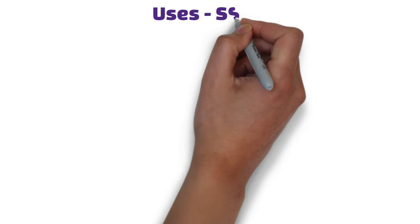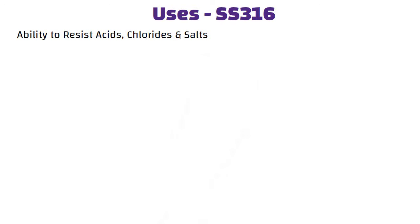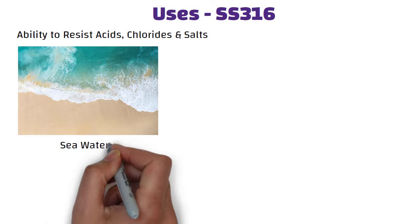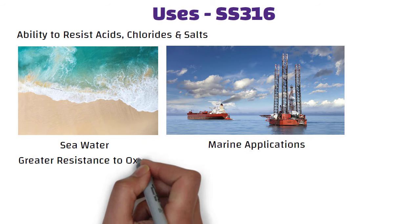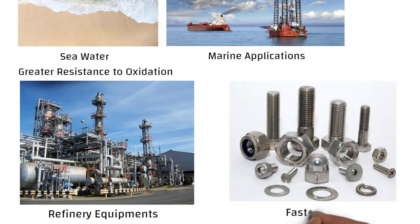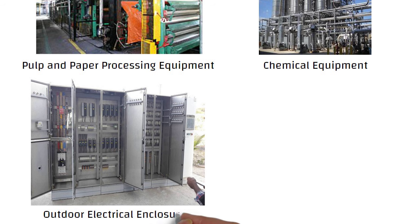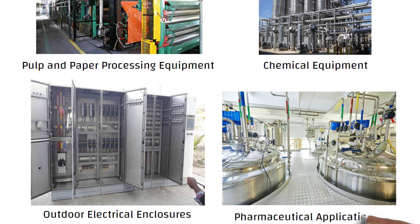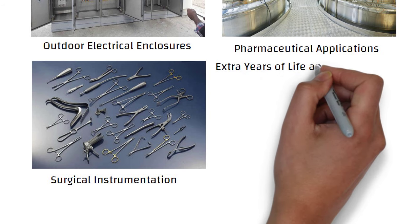On the other hand, SS316 has the ability to resist acids, chlorides and salts. Hence, it is more suitable for seawater environments and marine applications. Because of its greater resistance to oxidation, it is also widely used in refinery equipment, fasteners, pulp and paper processing equipment, chemical equipment, outdoor electrical enclosures, pharmaceutical applications and surgical instrumentation. In such applications, 316 stainless steel will last longer than 304, providing you with extra years of life and usage.